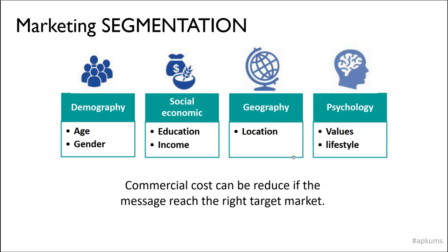You also need to know the location where you want to sell your product. For example, like 1Borneo — the target market there includes UMS students and UITM students around Alam Mesra. The fourth segmentation is psychological, which is based on lifestyle and values. For example, people who like new fashions — that's why entrepreneurs create boutiques to sell unique and fashionable clothes. You can identify your target market based on these four segmentation elements.